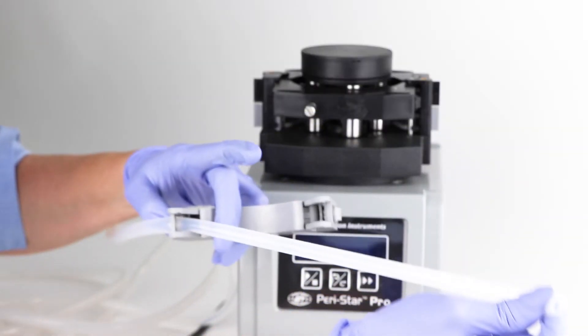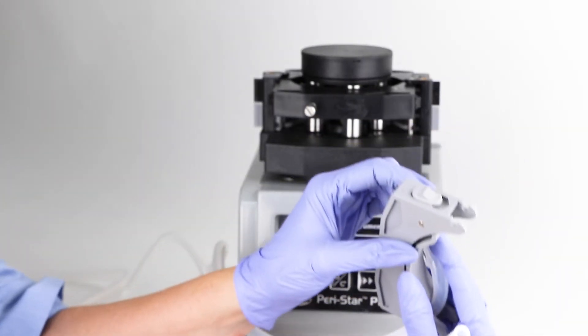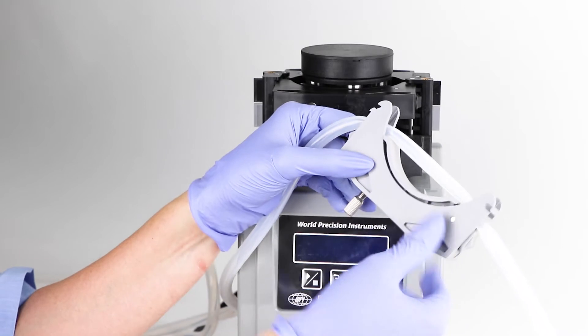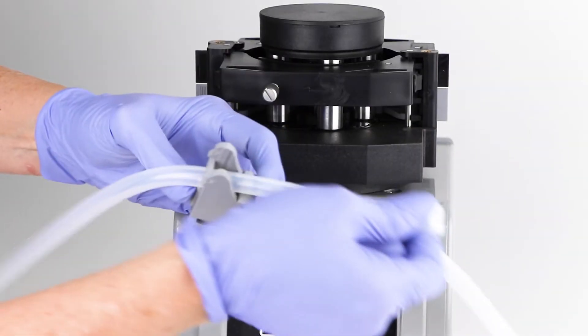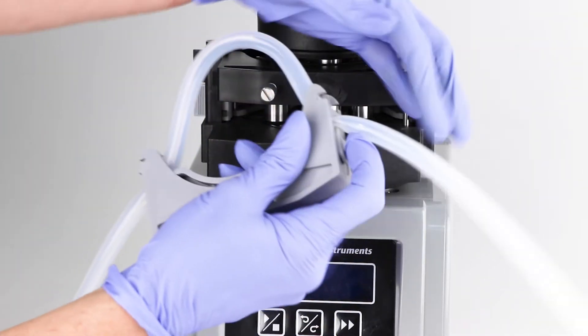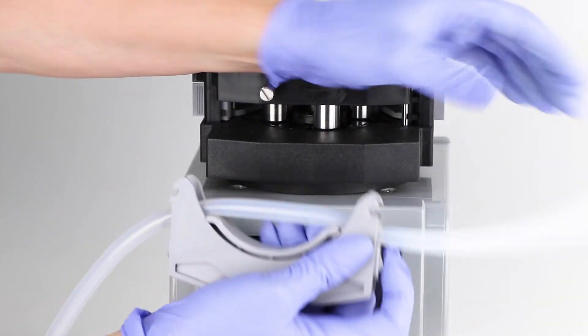Put a fresh section of tubing into the tubing fixture regularly. If the pump gets heavy use, do this weekly. A fresh section of tubing should be pulled through the pump rollers before the pump is left to run unattended.